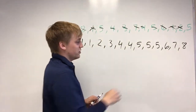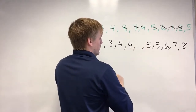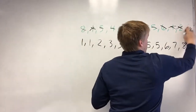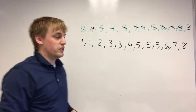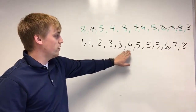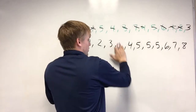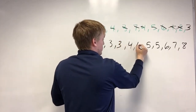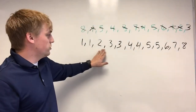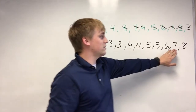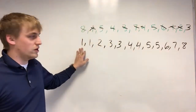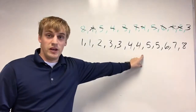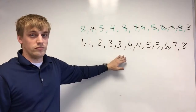I apologize — I believe that five is supposed to be a three. So I'm sorry about that. So we have one, one, two, three, three, four, four, five, five, six, seven, and eight. Okay, that's our data set. I must have copied it wrong. But this is our data set, and we've put it in order.